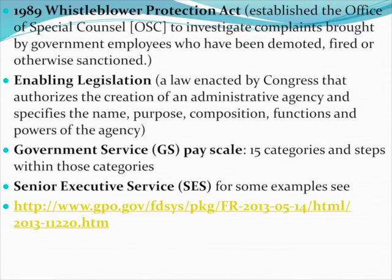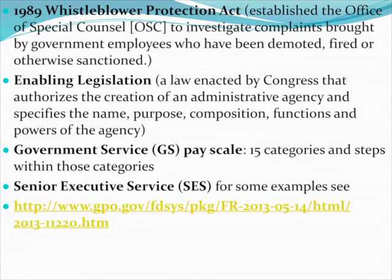Enabling legislation is simply a law that Congress passes authorizing the creation of an administrative agency, specifying its name, purpose, composition, function, and powers. The Government Service, or GS, pay scale has 15 categories, each with typically four steps. After taking your civil service exam, your scores combined with work experience and education are used to place you on the GS scale, assigned to a category from 1 to 15 and a step from 1 through 4. Based on seniority and performance, you advance higher on the GS scale.